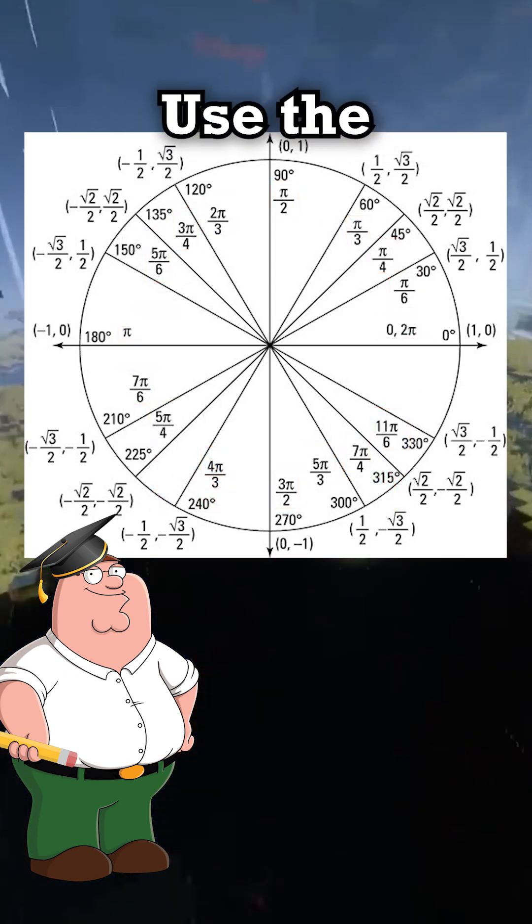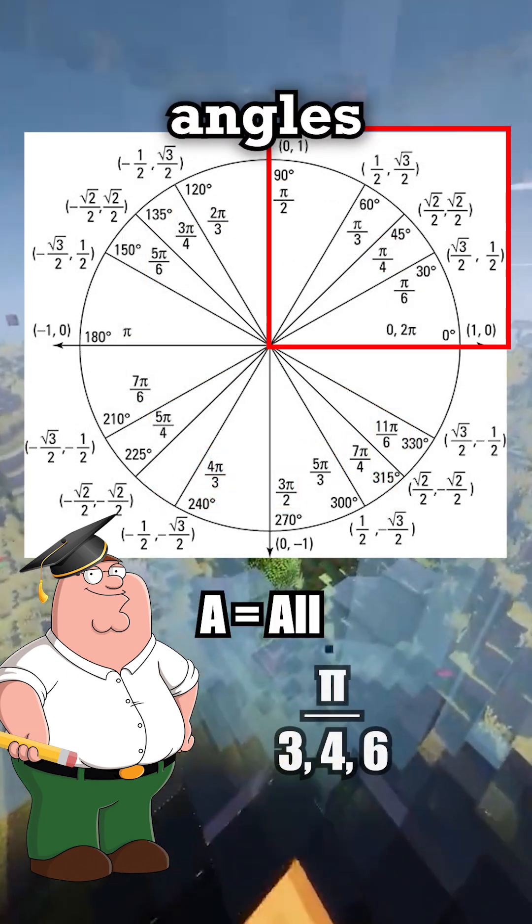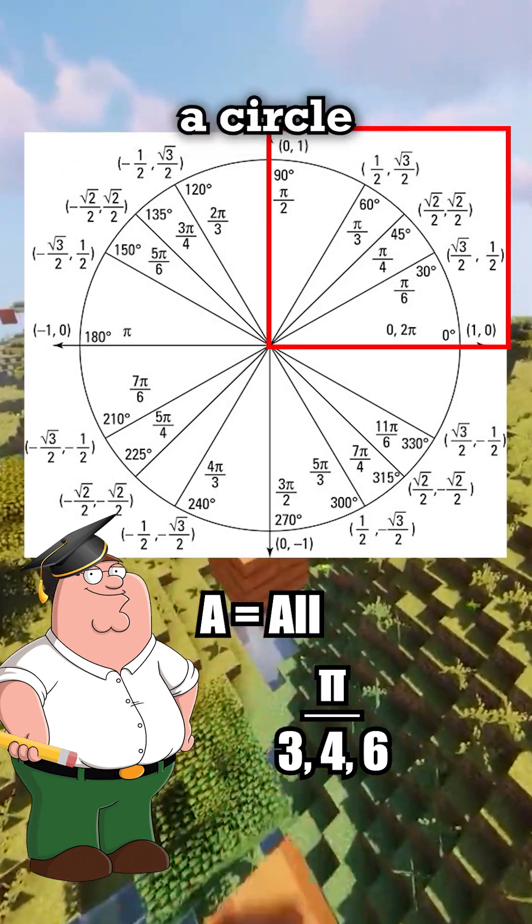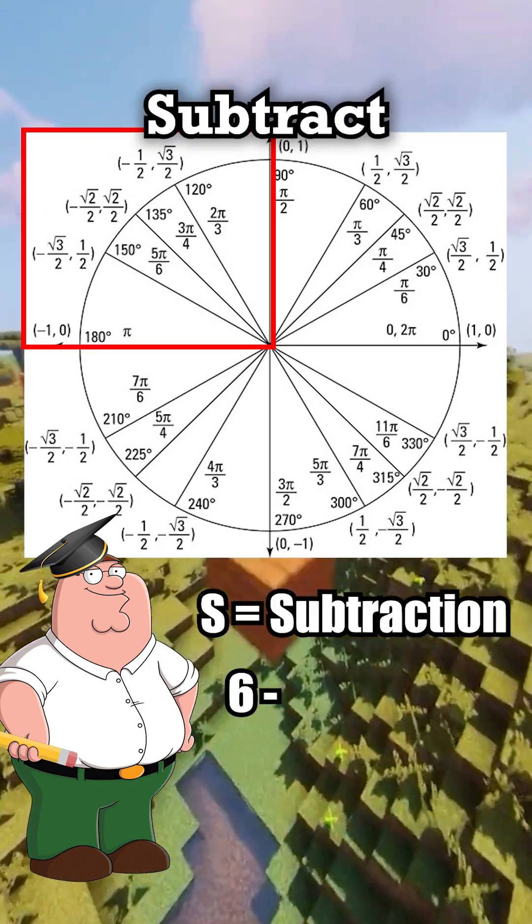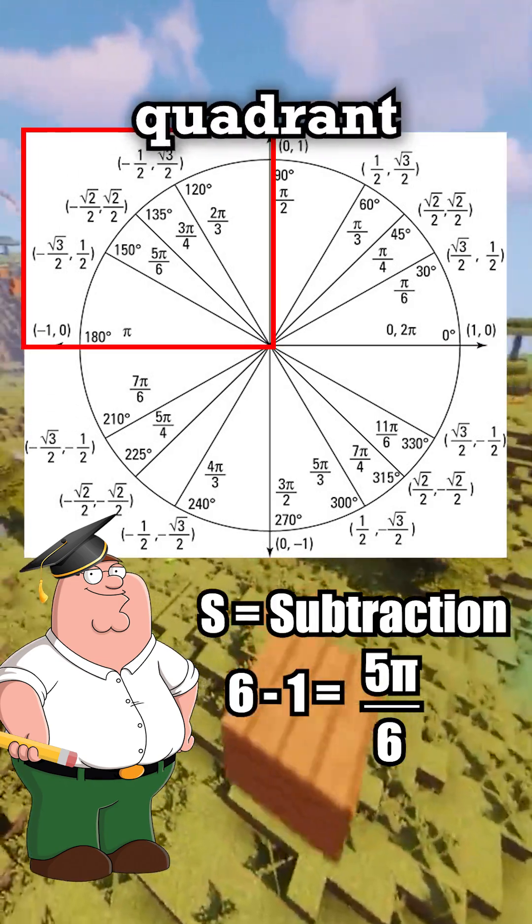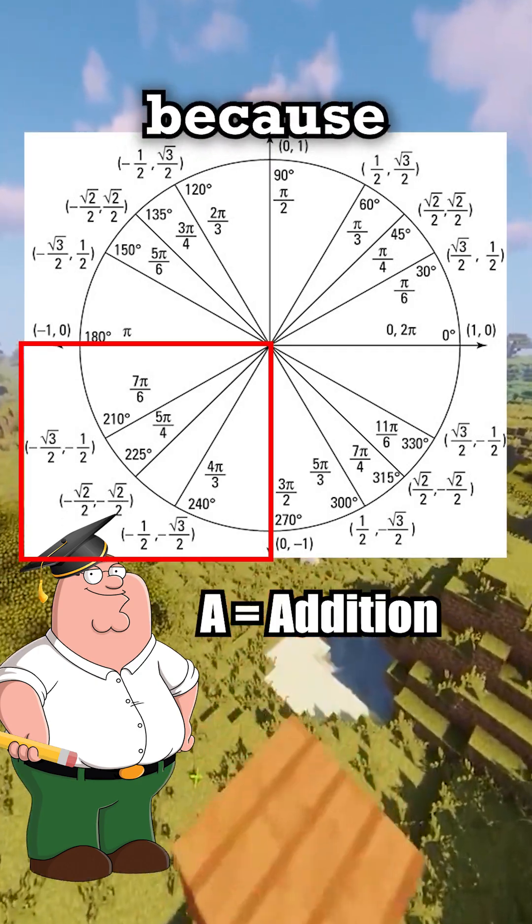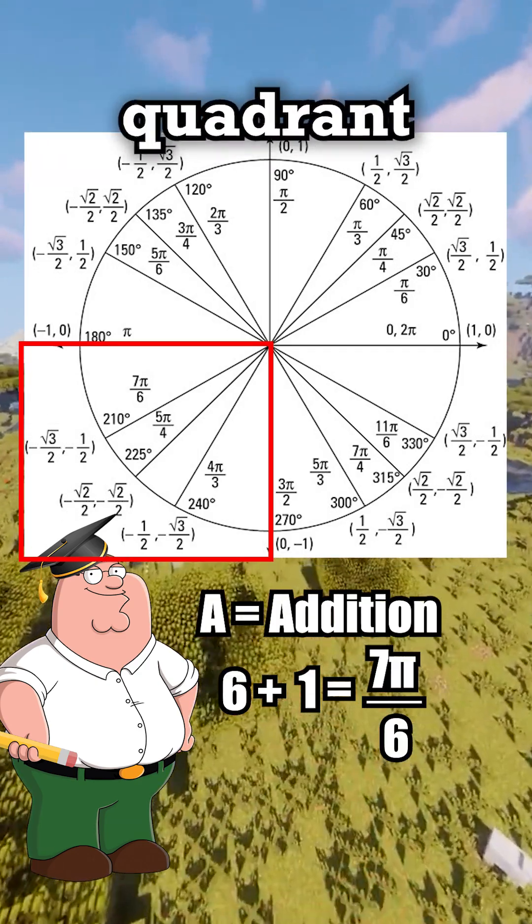To quickly recall radian values, use the ASAP method. A means all angles start with pi, since we're working with a circle. S means subtraction. Subtract one from the denominator for second quadrant angles. A means addition, because you add one to the denominator for third quadrant angles.